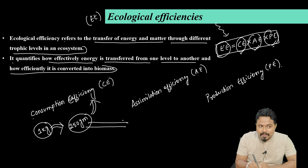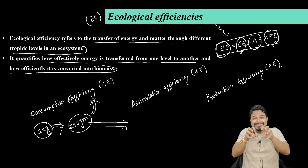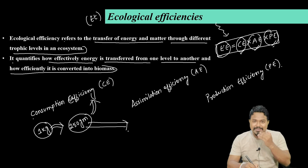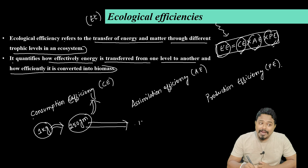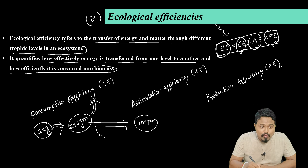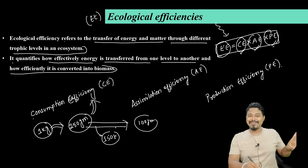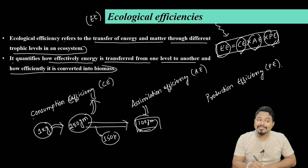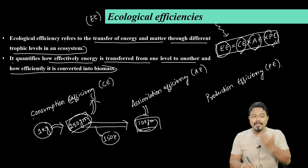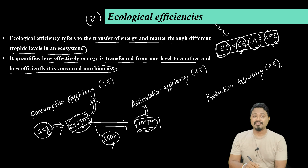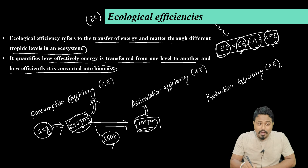From 250 grams consumed, the body assimilates a portion — this is assimilation efficiency. For example, out of 250 grams consumed, maybe 150 grams is assimilated. The body digests and absorbs that amount. The assimilation efficiency is the proportion of consumed food that is actually digested and absorbed. So if 100 grams is assimilated out of what was ingested, that is the assimilation efficiency.